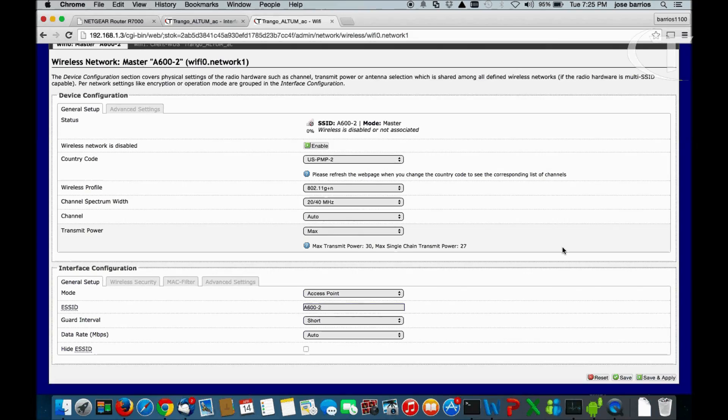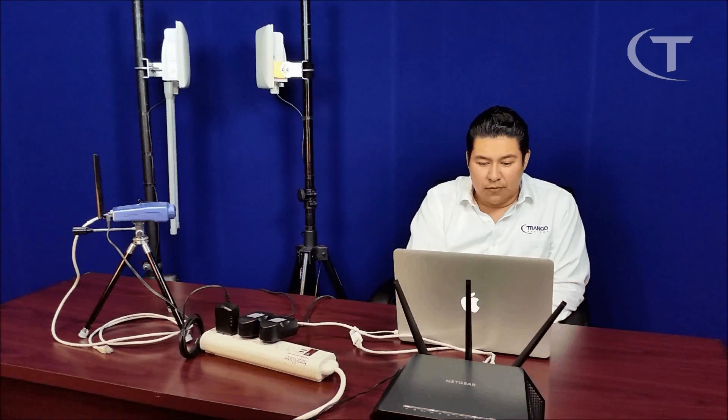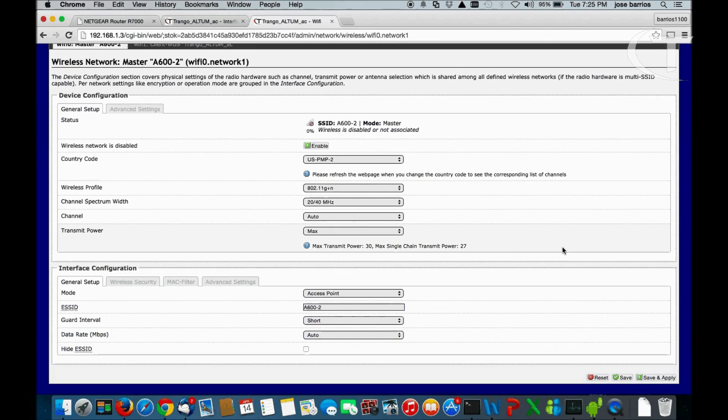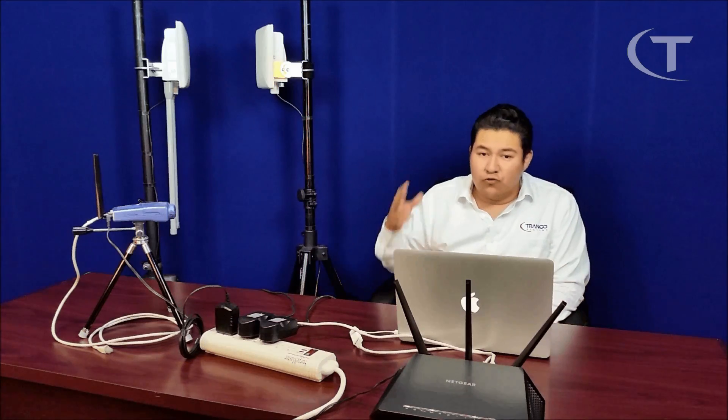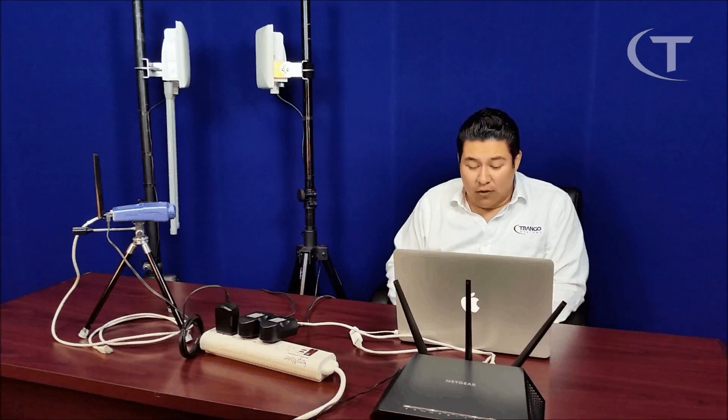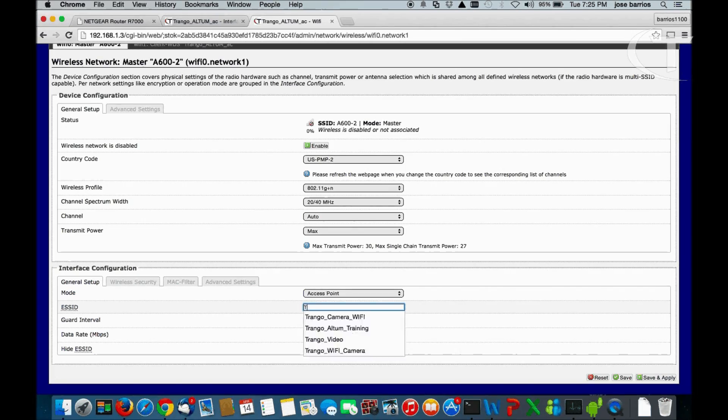First, we're going to go to the settings. Country code must be US 0.2, the default setting. Wireless profile is going to be G plus N. Channel spectrum channel width is going to be 40 MHz channel, the biggest one. The channel, we can keep it at auto for now. Max transmit power as well. Interface configuration, the mode has to be access point. SSID, this is how the end user is going to recognize the Wi-Fi access point. We're going to name it something we can recognize easily, so triangle underscore video test.